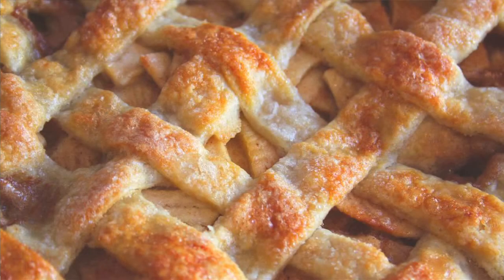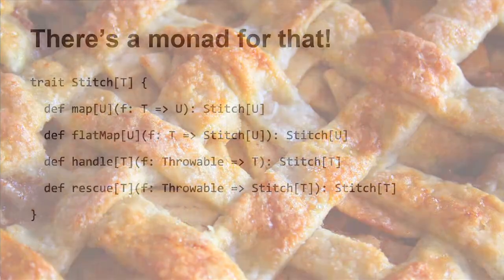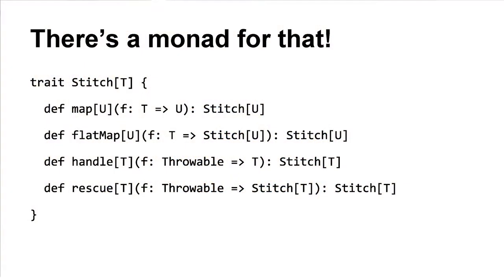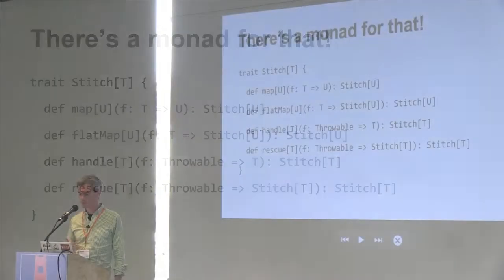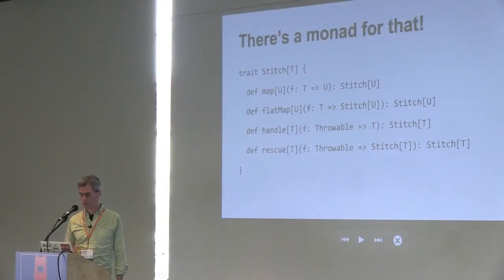I want to tell you quickly about the Stitch API. There is a monad for this problem. This API looks quite a bit like futures if you've used them — it's really almost identical in the external interface. The internal implementation is really different, and I'll talk about that briefly.